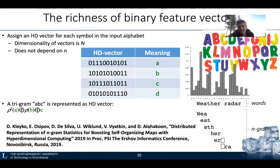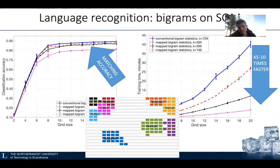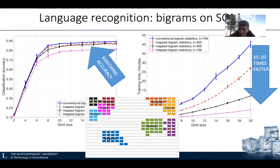N-grams, or using VSAs for implementing n-grams, has been known for many years. We used this approach to test as input to self-organized maps, and again we see pretty much the same effect. Encoding or representing input data using vector symbolic architectures allows matching accuracy — maybe somewhat reduced — but this is traded off for, in some cases, orders of magnitude gains in speed and memory consumption.